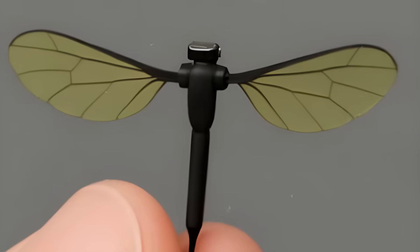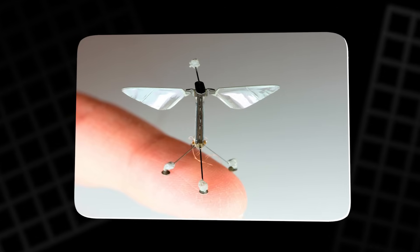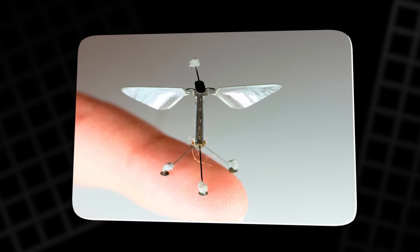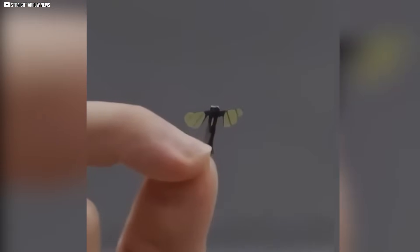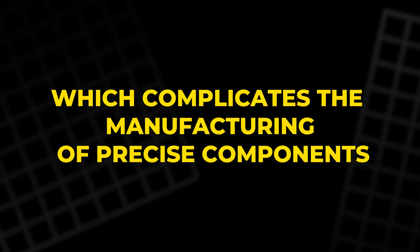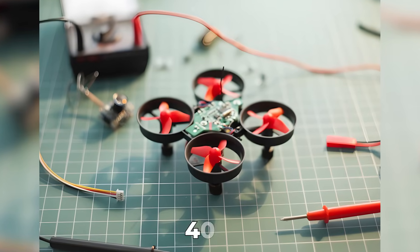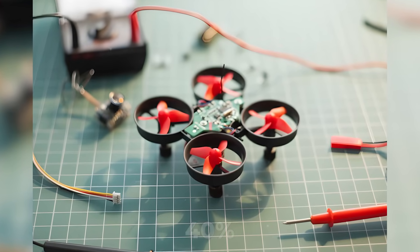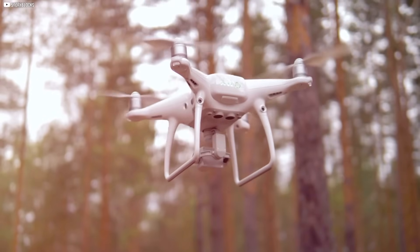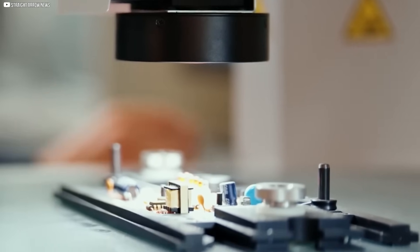The NUDT Mosquito, while revolutionary, brings with it several technical challenges and ethical dilemmas that need careful consideration. One of the primary difficulties lies in its incredibly small size, which complicates the manufacturing of precise components. The power management chip alone occupies four-tenths of the drone's volume, and balancing its minimal weight with durability remains a challenge. Components must withstand environmental conditions like moisture, temperature, and wear while maintaining high performance.